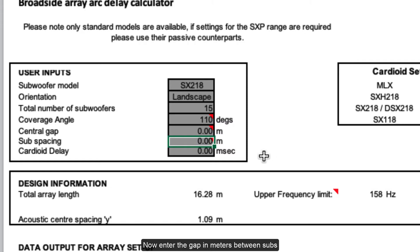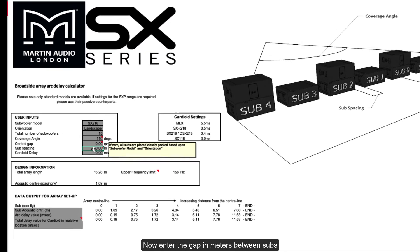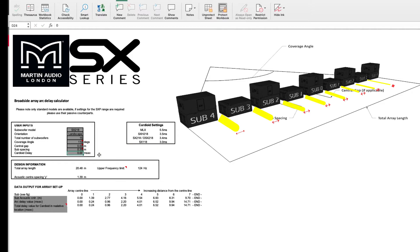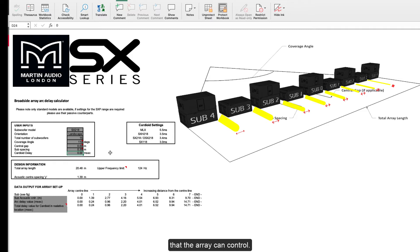Now enter the gap in metres between subs spaced out from the centre sub or subs. The spacing should be equal between all subs in the array. Note that the closer the spacing, the wider the frequency range that the array can control.